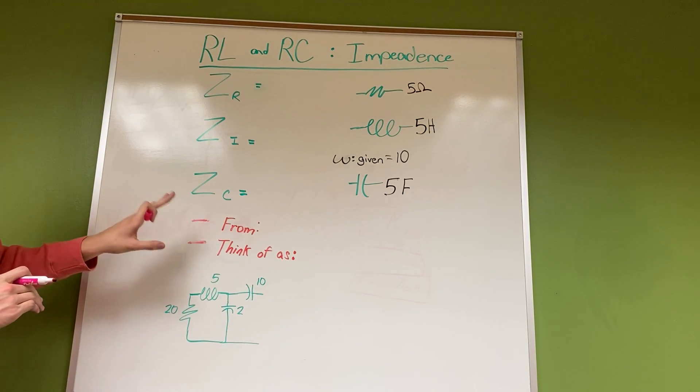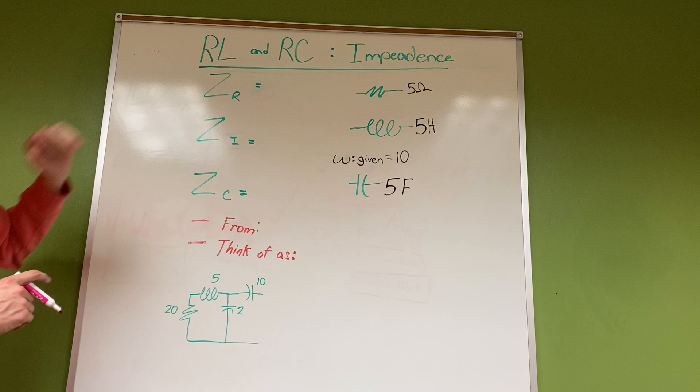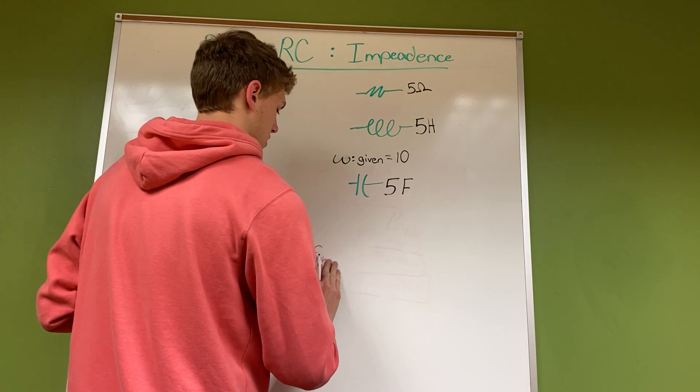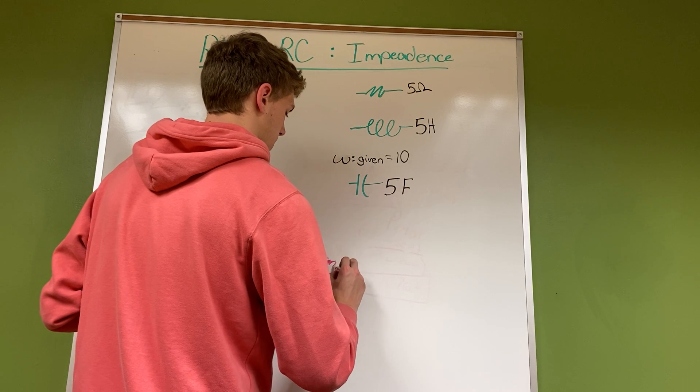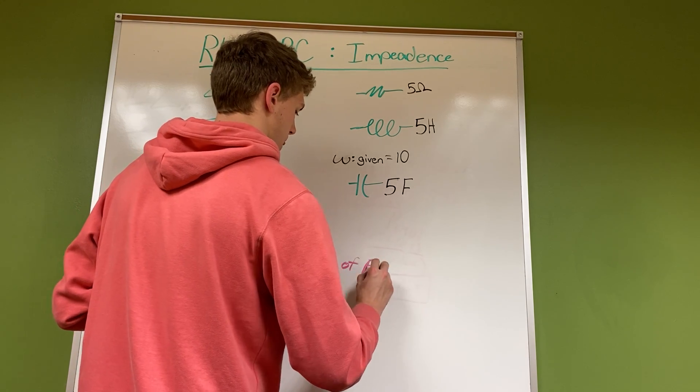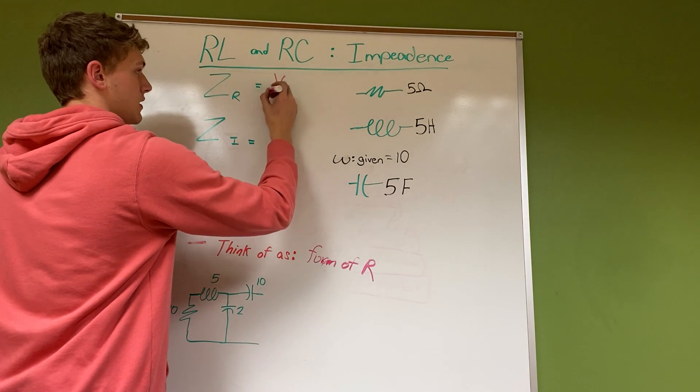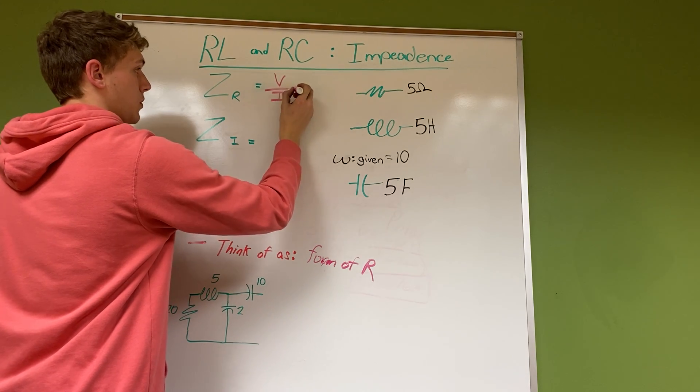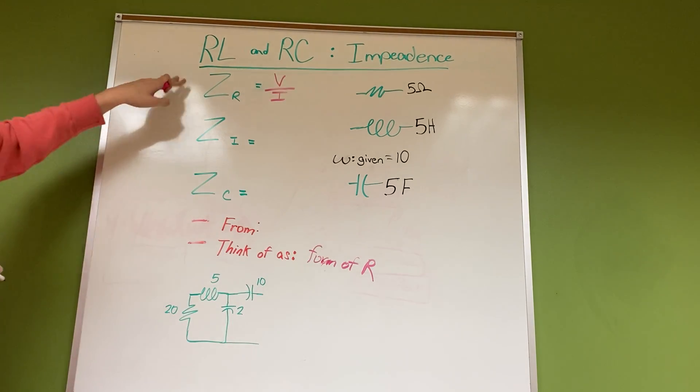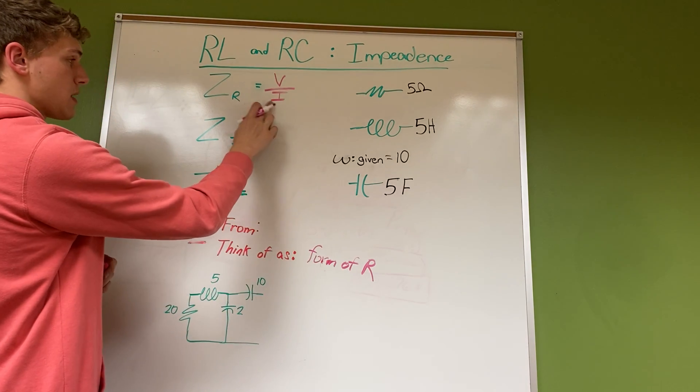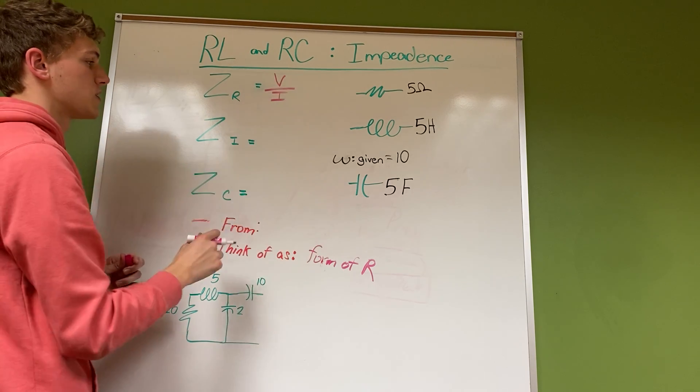To think of impedance, think about a form of resistance. We don't show it as R, but it's the same thing that we would think about for R with resistors, or it's V over I.